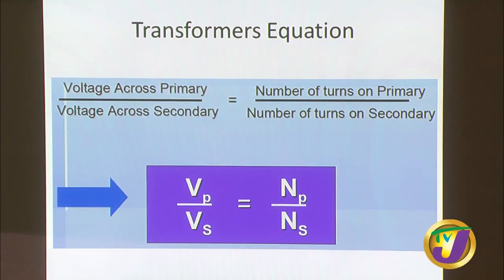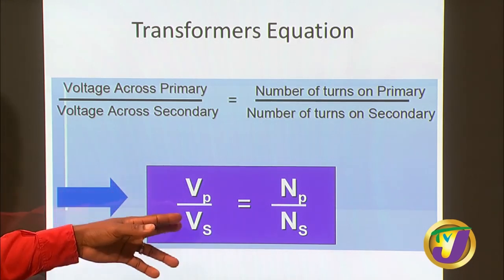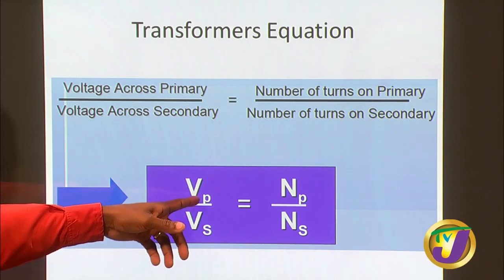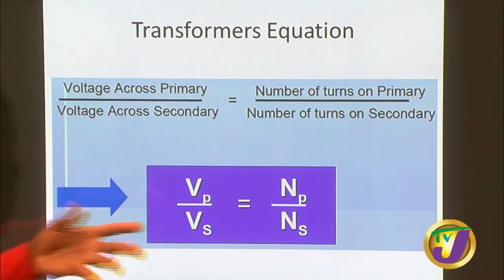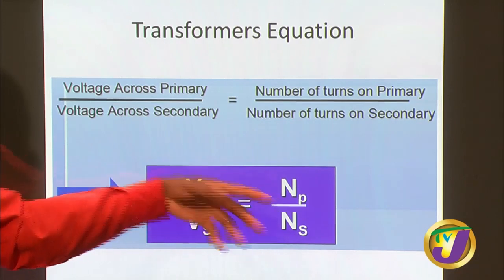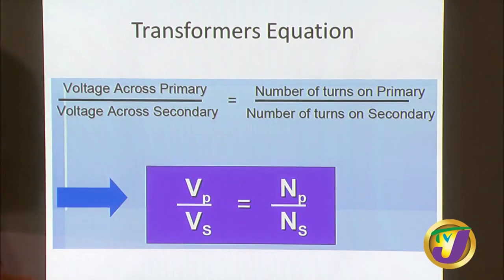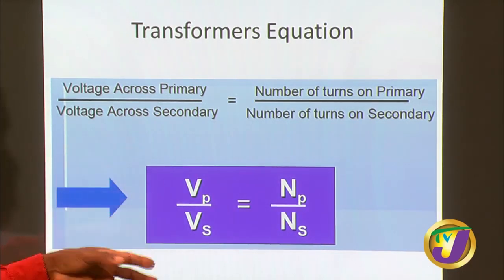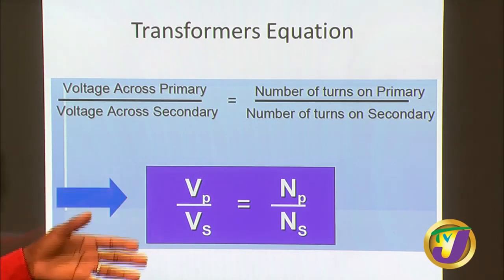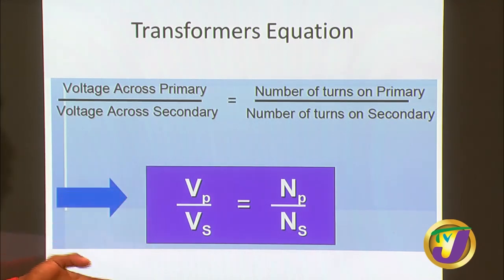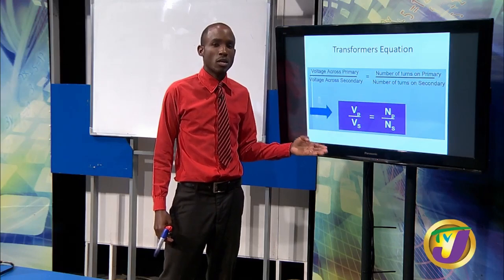Now this equation — physics always has equations. For those who know these symbols: V represents voltage, with subscripts P and S for primary and secondary. N represents number of turns: NP for primary, NS for secondary. The transformer equation is VP over VS equals NP over NS. Write it down and remember it — this is used to determine what you need to know where transformers are concerned. It is essentially a ratio comparing two voltages and two numbers of turns.